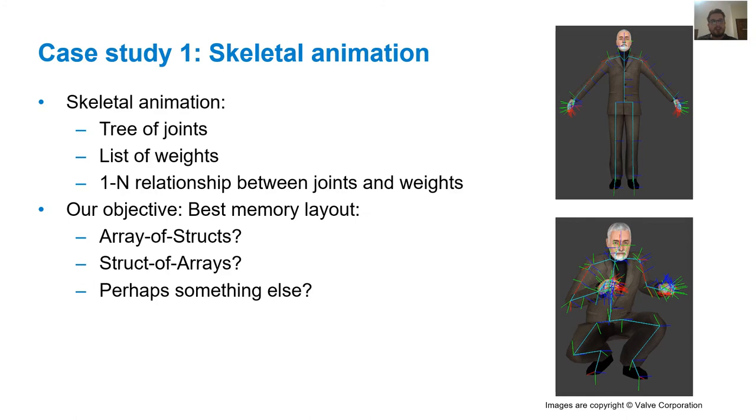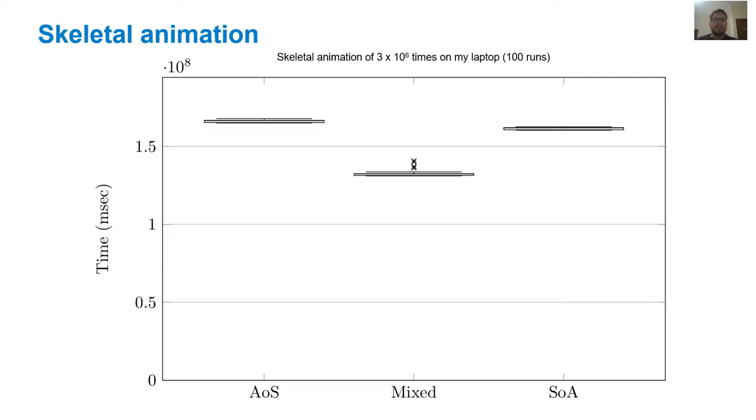In 3D Skeletal Animation, you have a tree of joints, and a list of weights. Each weight is controlled by one joint. Changing the joint's orientations changes the weight's positions, thus changing the pose the 3D model takes, as you can see in the bottom picture. We want to see if an array of structs, a struct of arrays, or a mixed layout for the weights shows better performance. And that's exactly what we did. We implemented these layouts and then measured the total performance of each layout on three distinct 3D models, each duplicated n times.